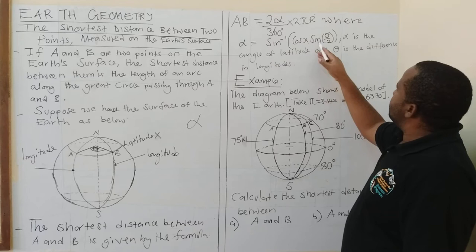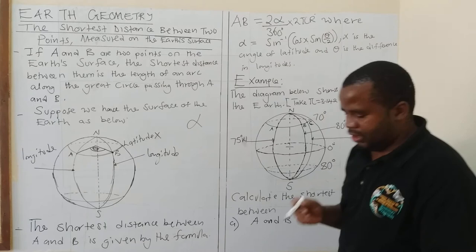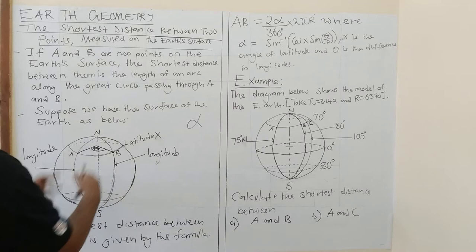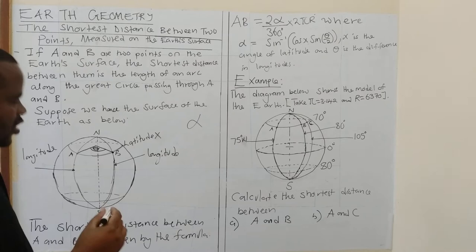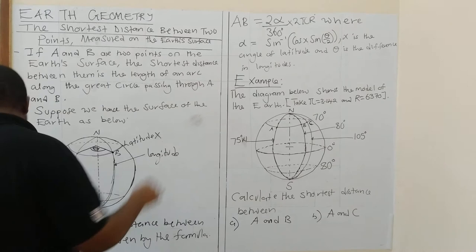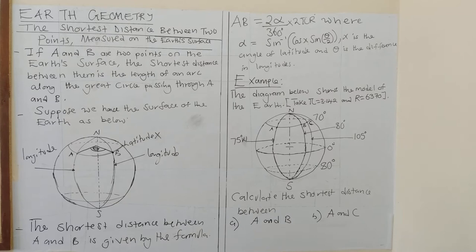What is theta? Theta is the difference in longitudes between the two points. Now, I must mention that this formula comes from the concept of trigonometry. When you combine trigonometry and sphere geometry, we are able to come up with the formula that is on the board.